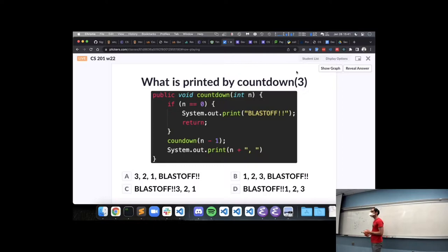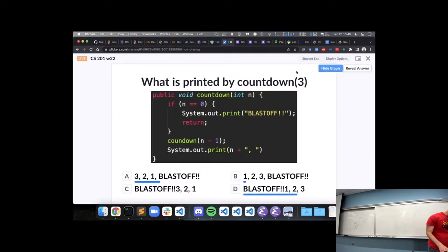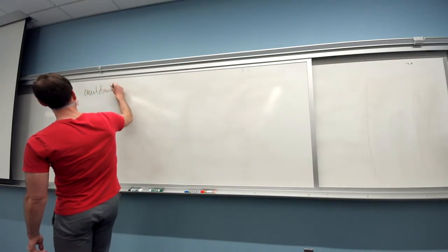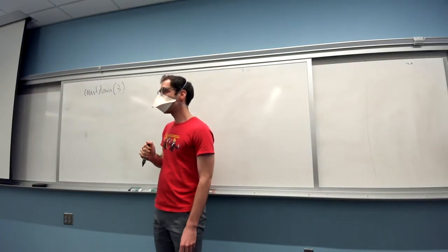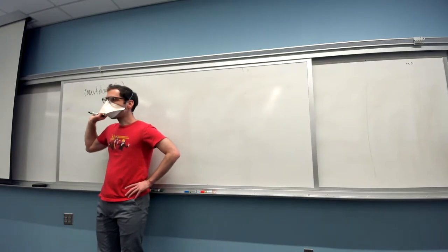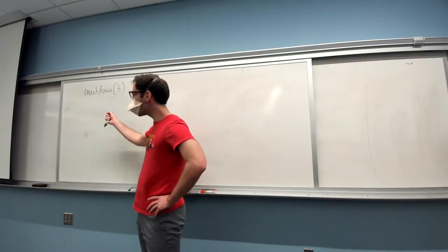All right, A versus D for the most part. Please discuss with your neighbors how you thought about the series of recursive calls, how this is going to work out. Some movement toward D. That is indeed what is going to happen when we run this function. We start off with a call countdown of 3. Can someone tell me what is the first thing that happens when we call countdown of 3? Test if n is equal to zero. Exactly. So is n equal to zero? It isn't.